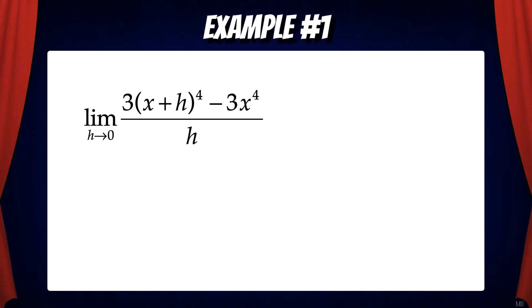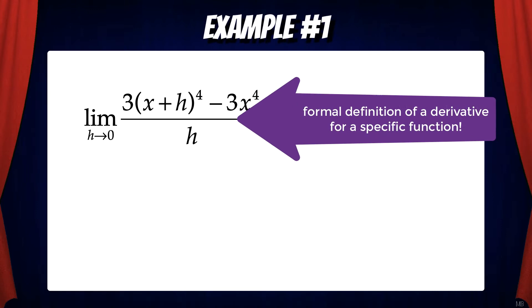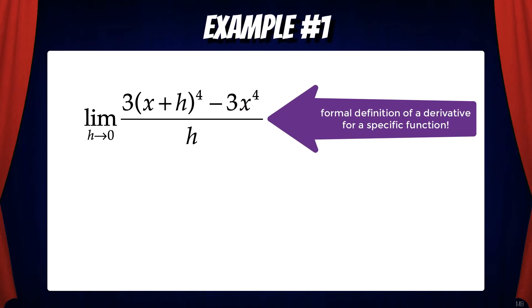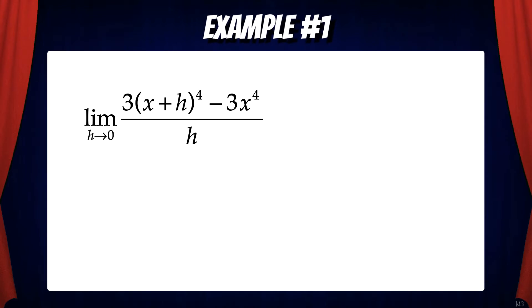Here's an example. Suppose we have the limit as h goes to zero of three times the quantity of x plus h to the fourth power minus three x to the fourth, all over h. Now we could simplify all the algebra, but instead we could recognize that this is the formal definition of a derivative for a specific function. What we need to do is extract the function.